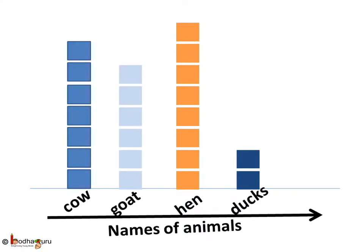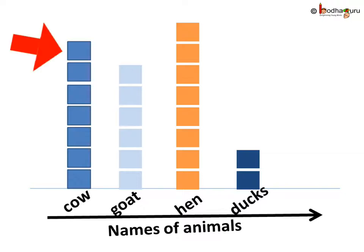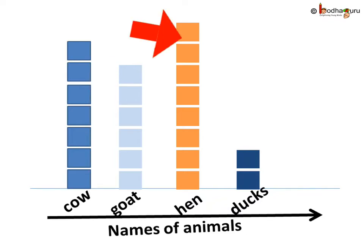After one year the chart looks like this. We can easily compare it with the previous year's chart to see how much his farm has grown. He now has seven cows — one cow has increased this year. He has six goats now, meaning two goats have increased compared to last year. The number of hens remains the same.